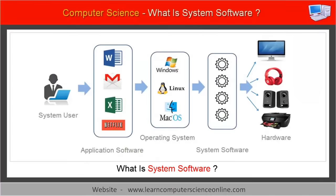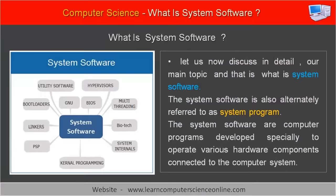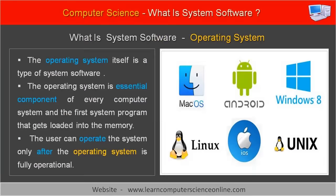Let us now discuss in detail our main topic: what is system software. The system software is also alternately referred to as a system program. System software are computer programs developed specially to operate various hardware components connected to the computer system. The operating system itself is a type of system software — it is an essential component of every computer system and the first system program that gets loaded into memory each time the system is powered on.